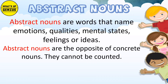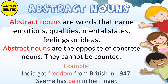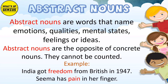Abstract Nouns are the words that name emotions, qualities, mental state, feelings or ideas. Abstract Nouns are opposed to concrete nouns. They cannot be counted. Example: India got freedom from British in 1947. Seema has pain in her finger.